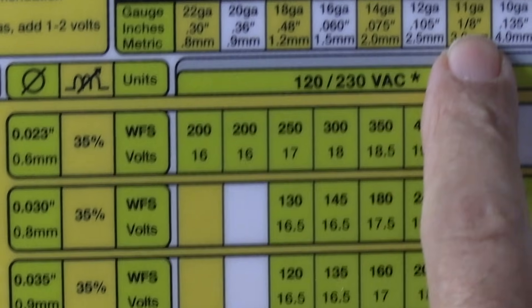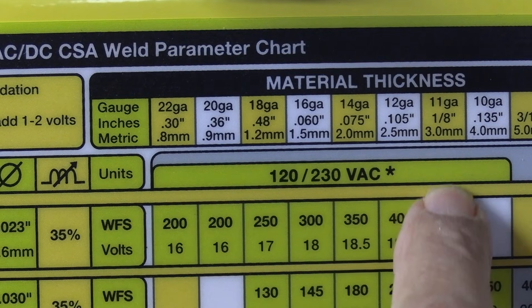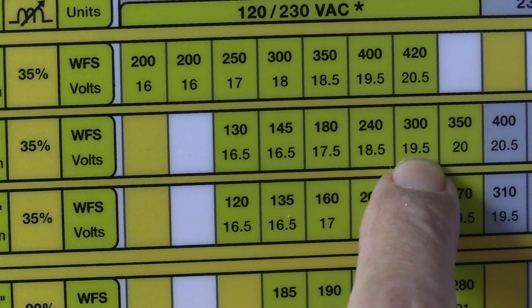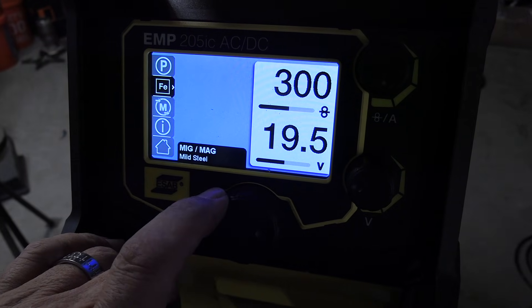As I follow the chart along, all I got to do is pick my thickness. I'm only welding 11 gauge thick stuff today. Got plenty of that. Tells me 19 and a half volts and 300 inches a minute. We'll see how it works.